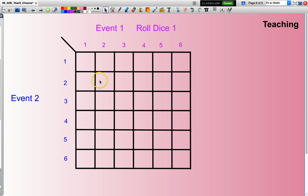And that will be represented looking down the columns. The second event, that is rolling the second dice, and what I do is I look for all the combinations.